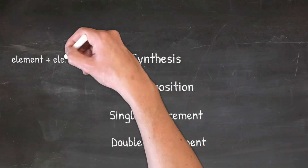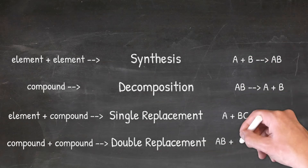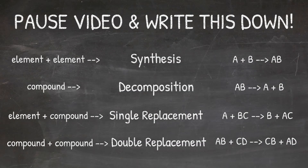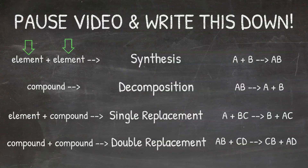Here is a chart that puts all this information together. Pause the video now and write this down as it can be a very helpful resource as you identify reaction types. As you can see on the left side of the chart, the only thing that really matters and that you need to focus on is the reactants — it does not really matter what the products are when determining reaction type. If you start with two elements, the reaction will always be synthesis. If you start with only one compound, it will always be decomposition.